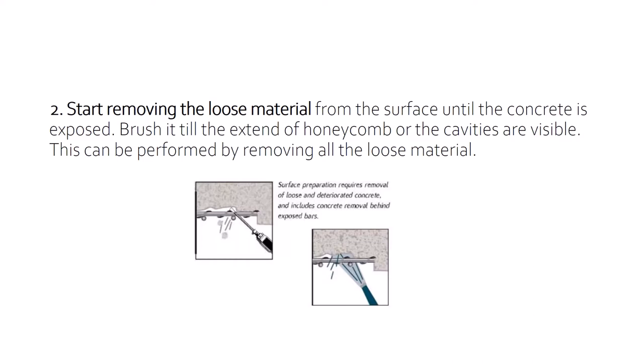During this process you can clearly see reinforcement bars and certain voids which are not filled properly. This cleaning process — removal of loose material — can be done by brushing or using washing methods such as sandblasting or water blasting, so that all loose materials and debris present on the surface are removed.